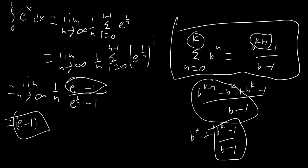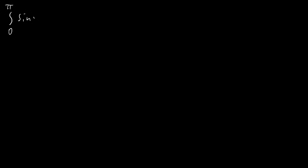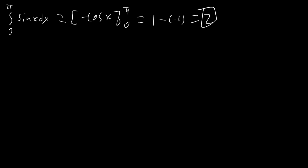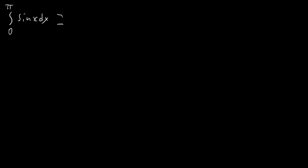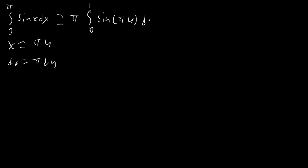We can check that using normal integration and it matches perfectly. Our final integral is the integral from 0 to pi of sine of x dx. Doing it the normal way gives negative cosine x evaluated at pi and 0, which equals 1 minus negative 1 equals 2. But let's pretend I can't figure out that the integral of sine x is cosine x. Since this integral goes from 0 to pi, I'll convert it: let x equal pi u, dx equals pi du. So we get pi times the integral from 0 to 1 of sine of pi u du.